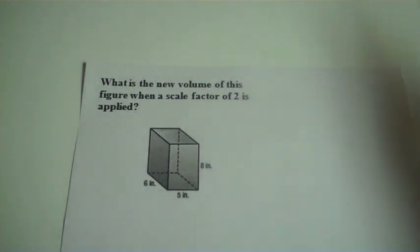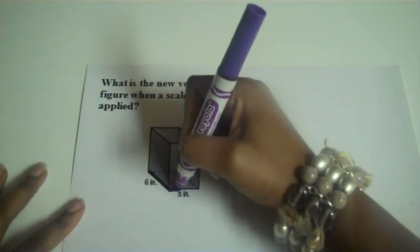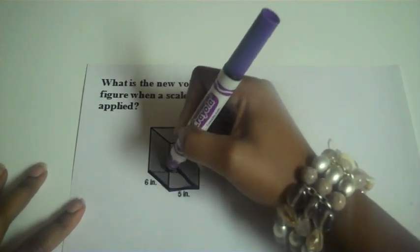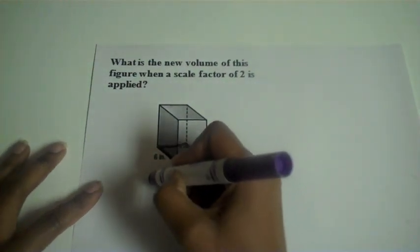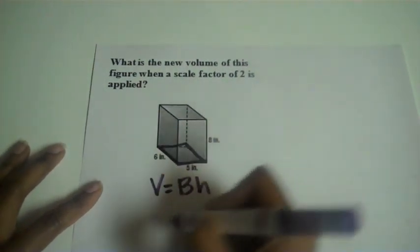In the first example, it says what is the new volume of this figure when a scale factor of 2 is applied? Well, the first thing I'll have to do is find the volume of my original figure. So remember, it's a good practice to shade in your base. And I'm going to start with the formula, area of the base times height.